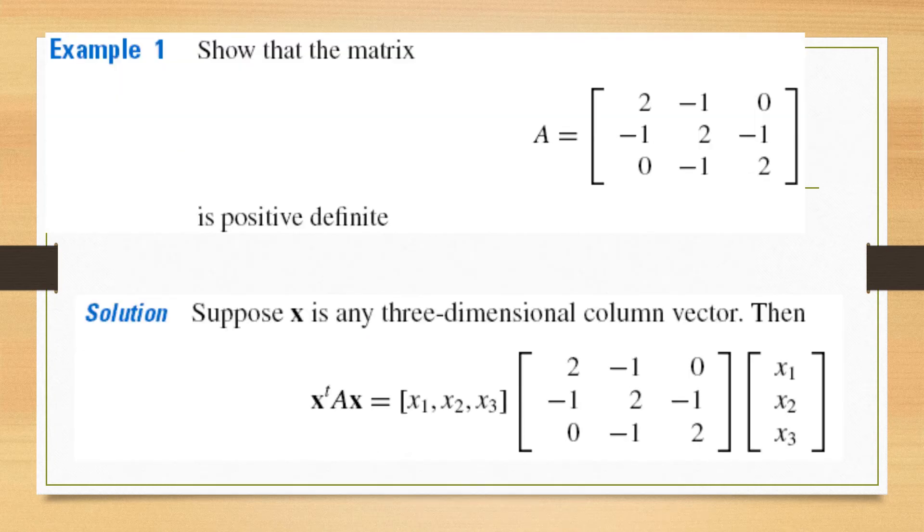We consider the example that A is a 3 by 3 matrix. We have to show that this matrix is positive definite. We observe that this A matrix is symmetric matrix because its transpose is equal to the given matrix A.